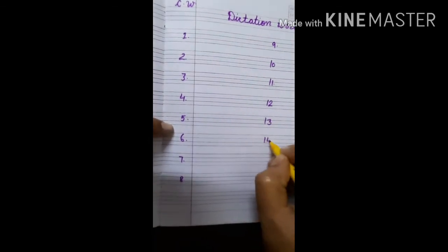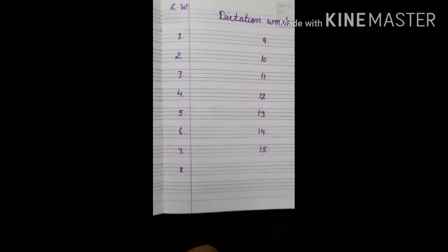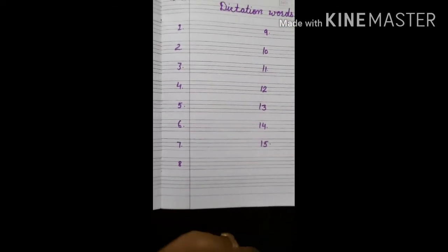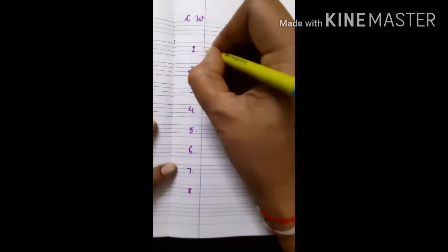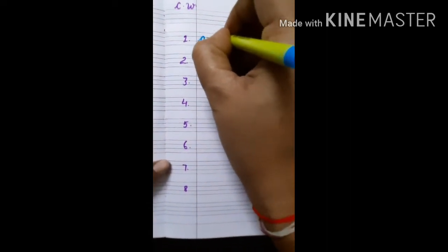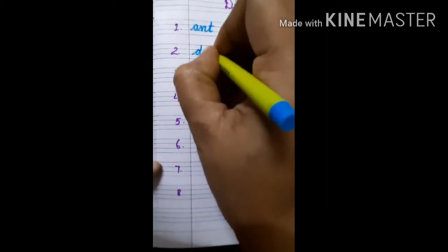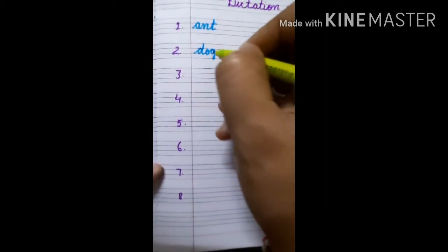Now start writing. First, number one: and - A N D - and. Number two: dog - D O G - dog.